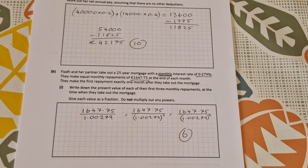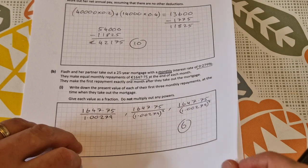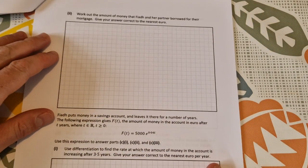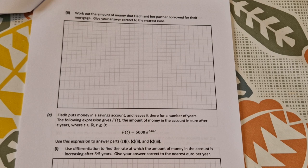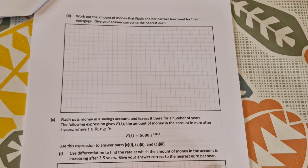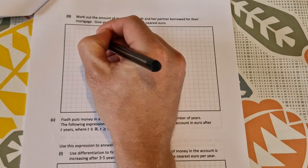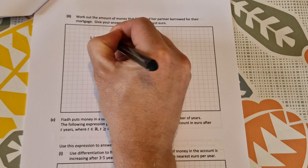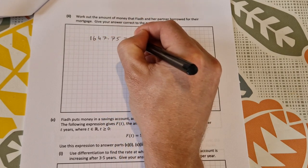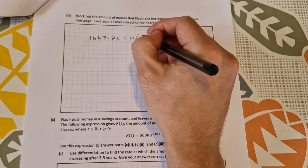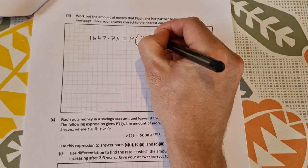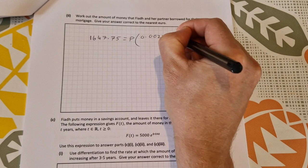That's worth six marks for the first part of part B. The second part: work out the amount of money that Fia and her partner borrowed for their mortgage and give your answer correct to nearest euro. You can do this in two ways, you can use the S of n formula or the amortization formula. I think the easier way is to use the amortization formula for this. So we have 1,674.75 is equal to P, that's what we're looking for, times our percentage rate 0.00279 times 1 plus the percentage rate, so 1.00279, to the power of the amount of repayments.